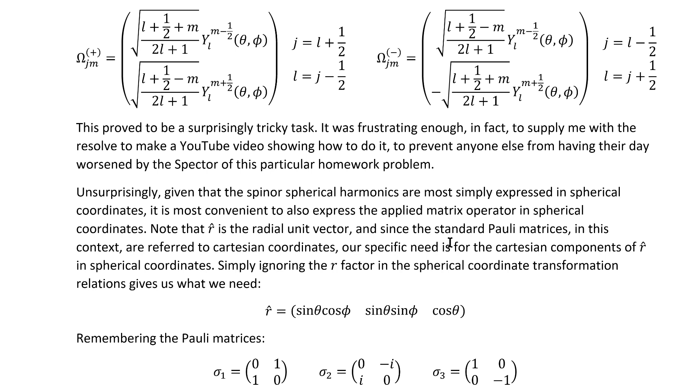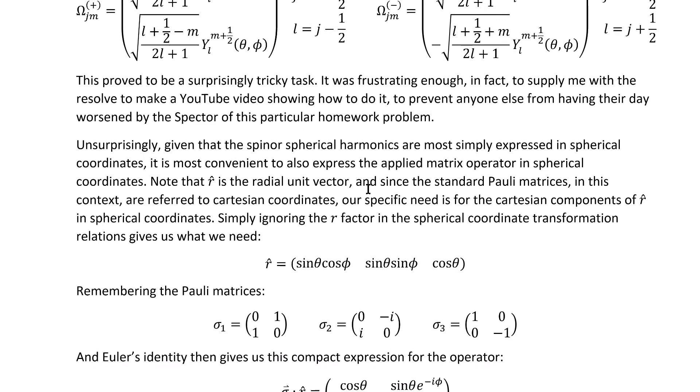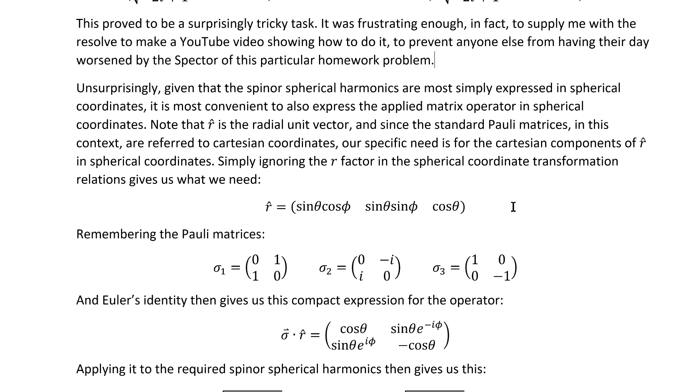Now, unsurprisingly, given that spinor spherical harmonics are most simply expressed in spherical coordinates, it's most convenient to also express this applied matrix operator in terms of spherical coordinates. Note that R-hat is the radial unit vector, but since the standard Pauli matrices in this context are referred to Cartesian coordinates, we need the Cartesian components of R-hat in spherical coordinates, and that can be found simply by ignoring the R-factor in the front of the coordinate transformation relations from Cartesian to spherical coordinates, so we just wind up with this.